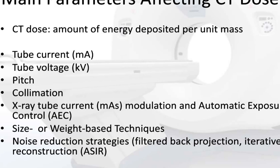CT dose is the amount of energy deposited per unit mass. There are multiple factors that will affect the CT dose such as tube current, tube voltage, pitch, and collimation. We will also discuss X-ray tube current modulation strategies, how size and weight of the patient can affect CT dose, and noise reduction strategies.